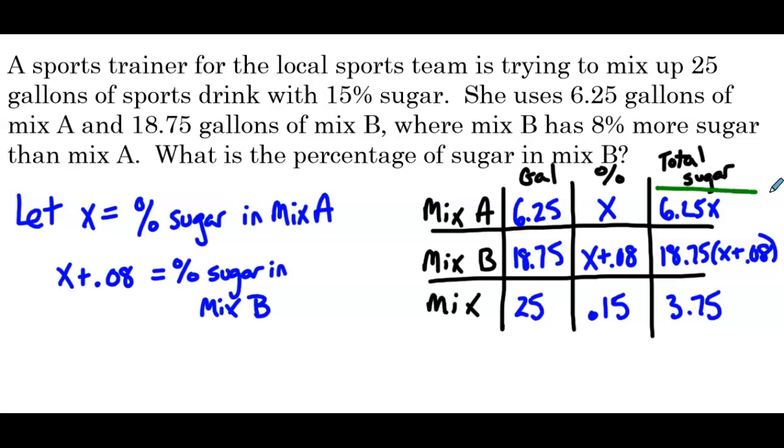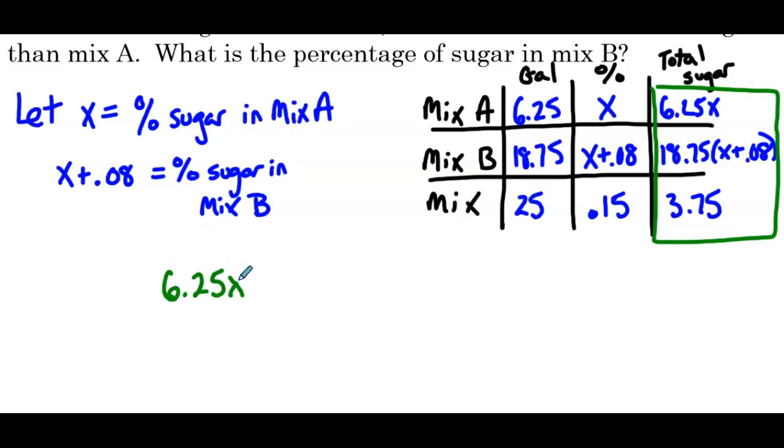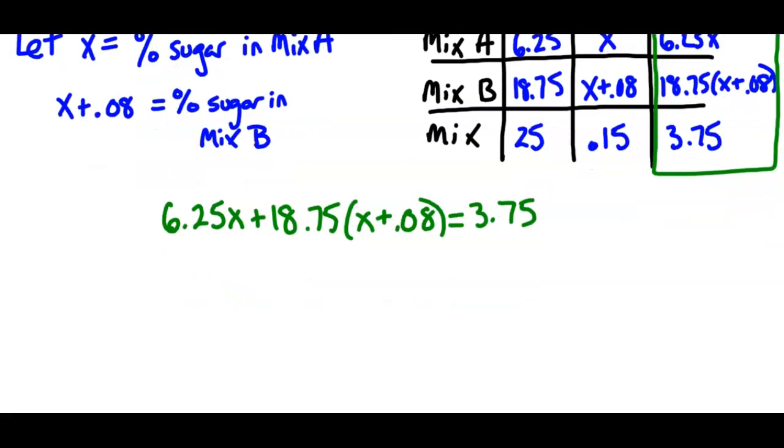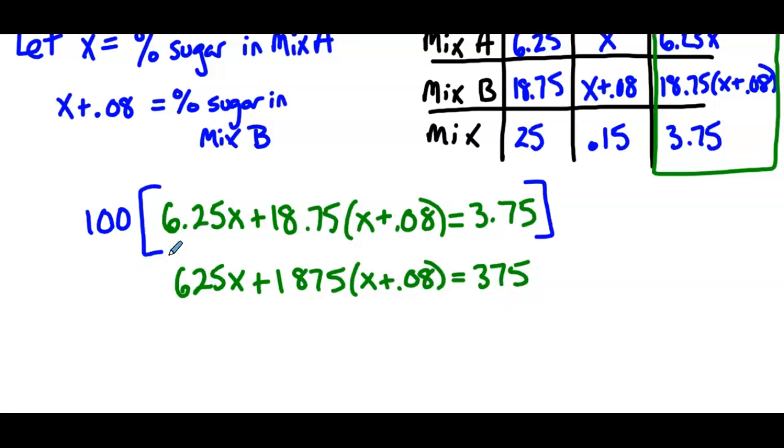Using that last column to create our equation, we have 6.25x plus 18.75 times x plus 0.08 equals 3.75. Now, in this example, I'm going to multiply the equation by 100, similar to how we did in our coin word problems. So that's going to give me 625x plus 1,875 times x plus 0.08. And that's equal to 375. Now, just in case this is the first video you're watching, the reason when we multiply 100 by each term, I'm not multiplying the 18.75 and the x plus 0.08 by 100. Think of multiplying 2 times 3 times 4. We would do 2 times 3 first, get 6, and then multiply that by 4. So similarly here, I'm going to do 100 times 18.75 first, get 1,875, and then we're multiplying that by the quantity x plus 0.08.